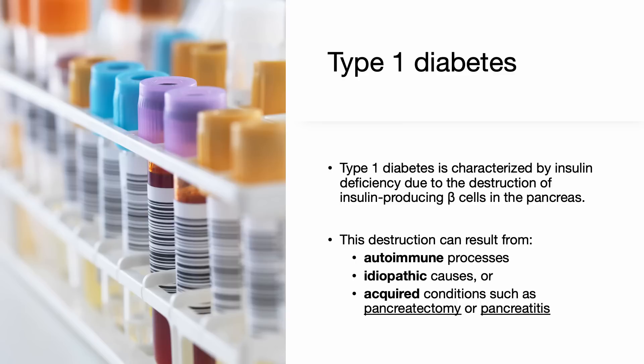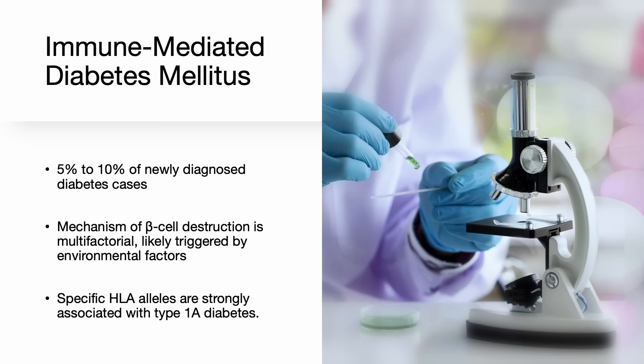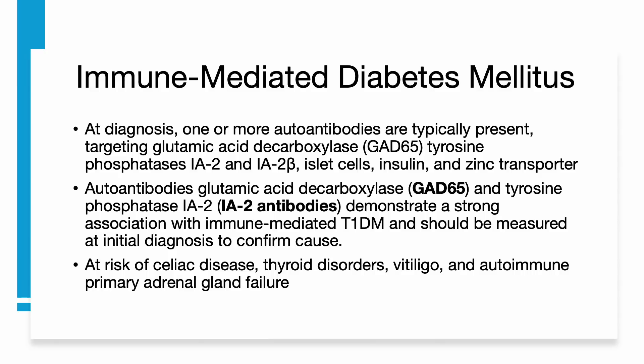Type 1 diabetes is characterized by insulin deficiency due to the destruction of insulin-producing beta cells in the pancreas. This destruction can result from autoimmune processes, idiopathic causes, or acquired conditions such as pancreatectomy or pancreatitis. Immune-mediated type 1 or type 1a diabetes accounts for about 5 to 10 percent of newly diagnosed diabetes cases. The mechanism of beta cell destruction is multifactorial, likely triggered by environmental factors in individuals with genetic susceptibilities, and specific HLA alleles are strongly associated with type 1a diabetes.